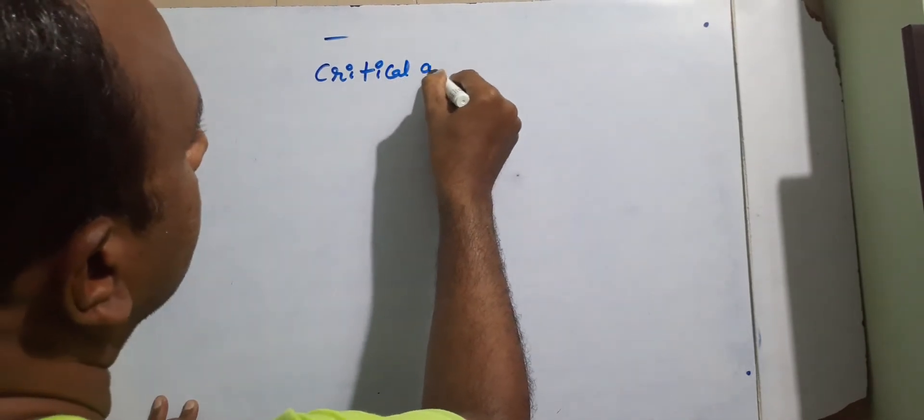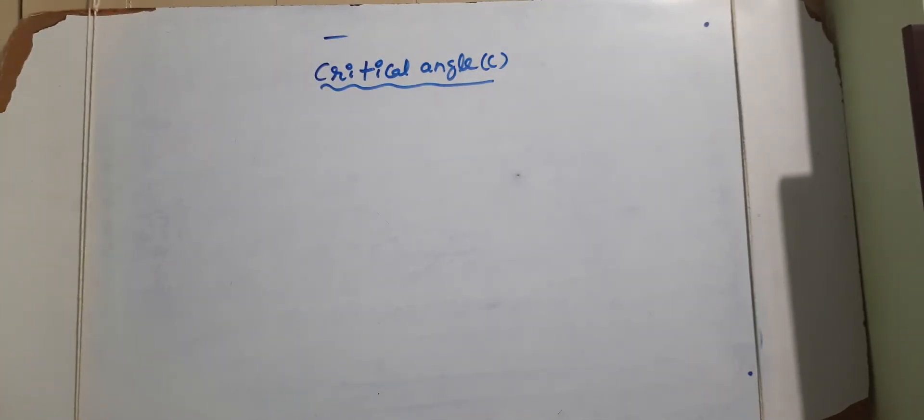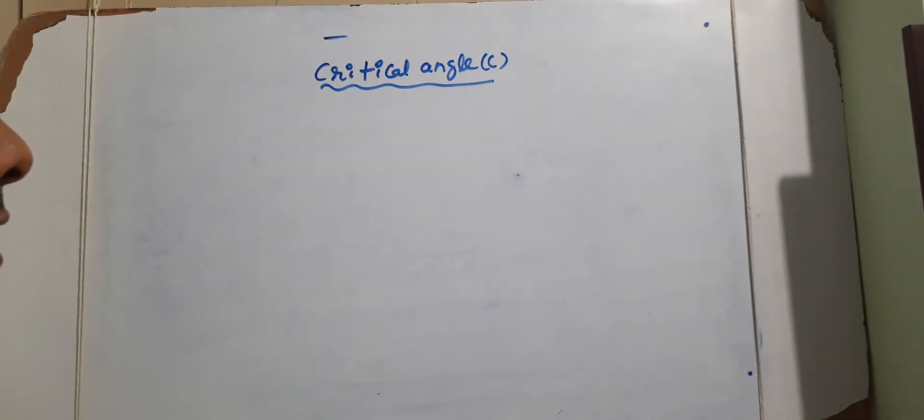Welcome to our physics class. We are going to learn about the critical angle topic in ray optics, specifically in refraction of light at plane surfaces. This topic is in 10+2 physics, ray optics, as well as in the state syllabus for intermediate second year and class 10 CBSE syllabus.